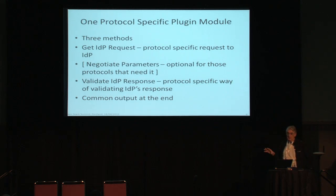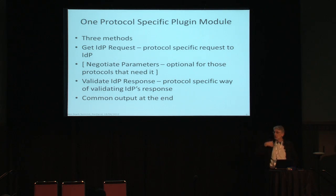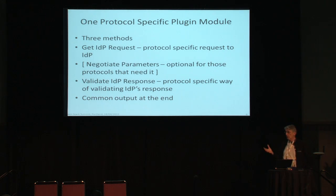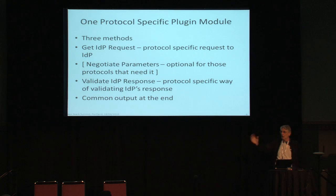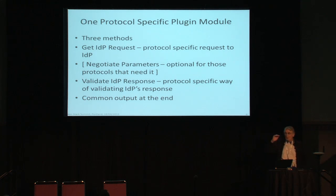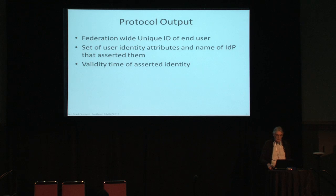We have one protocol-specific module with three methods. The first method is get_request — getting the request the user will send to the IDP. The second method is optional negotiation, which most protocols today don't need; only the IT-ABFAB work has this negotiation step. The third method, which everyone implements, is validate_response — the user gives the response to Keystone, Keystone calls the protocol-dependent module with the blob from the remote party and asks it to validate. All protocol-dependent modules return the same standardized output.